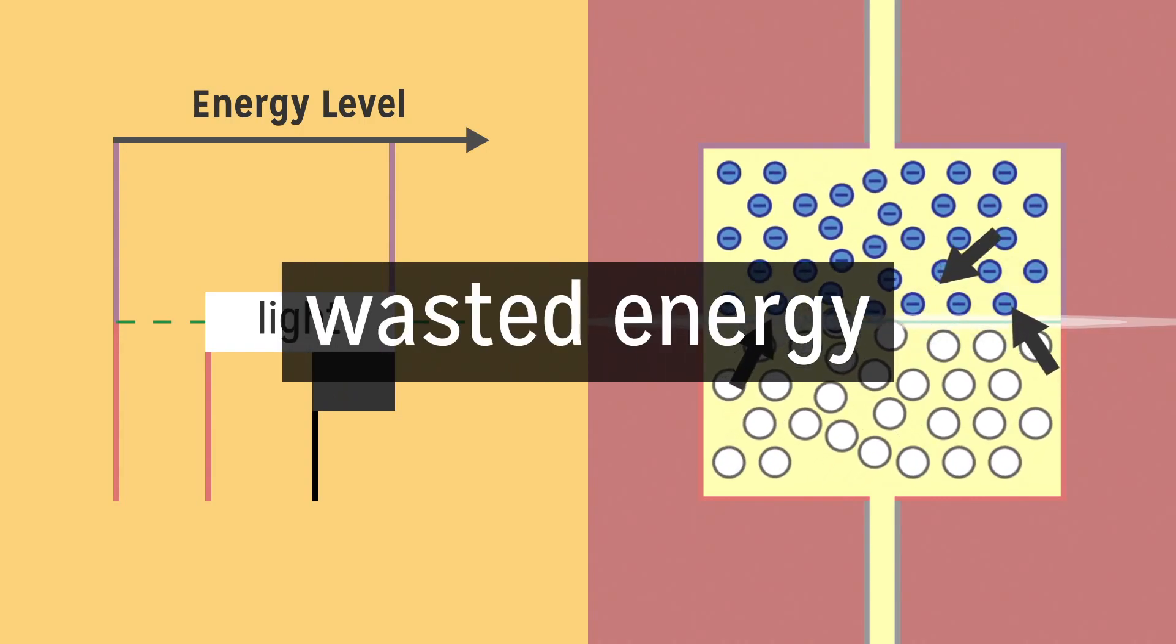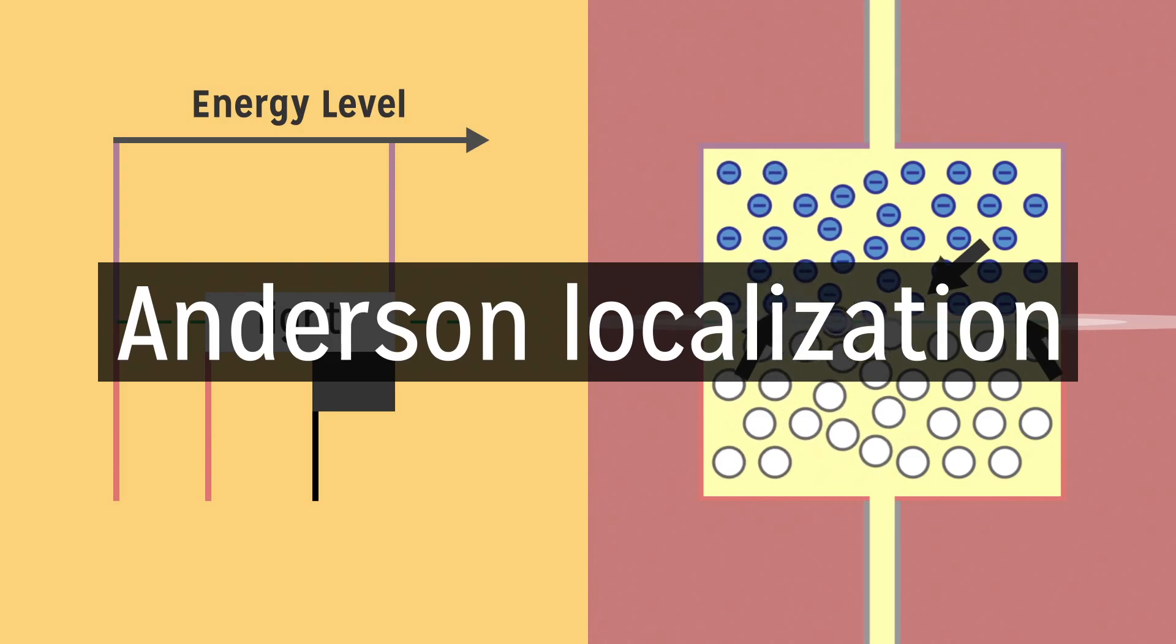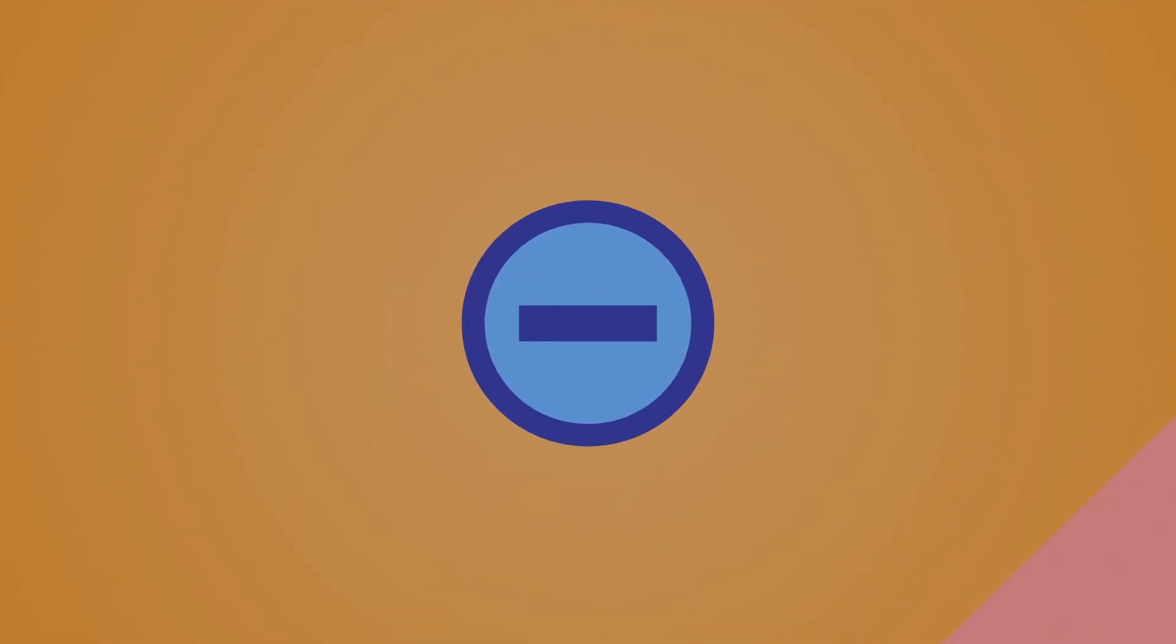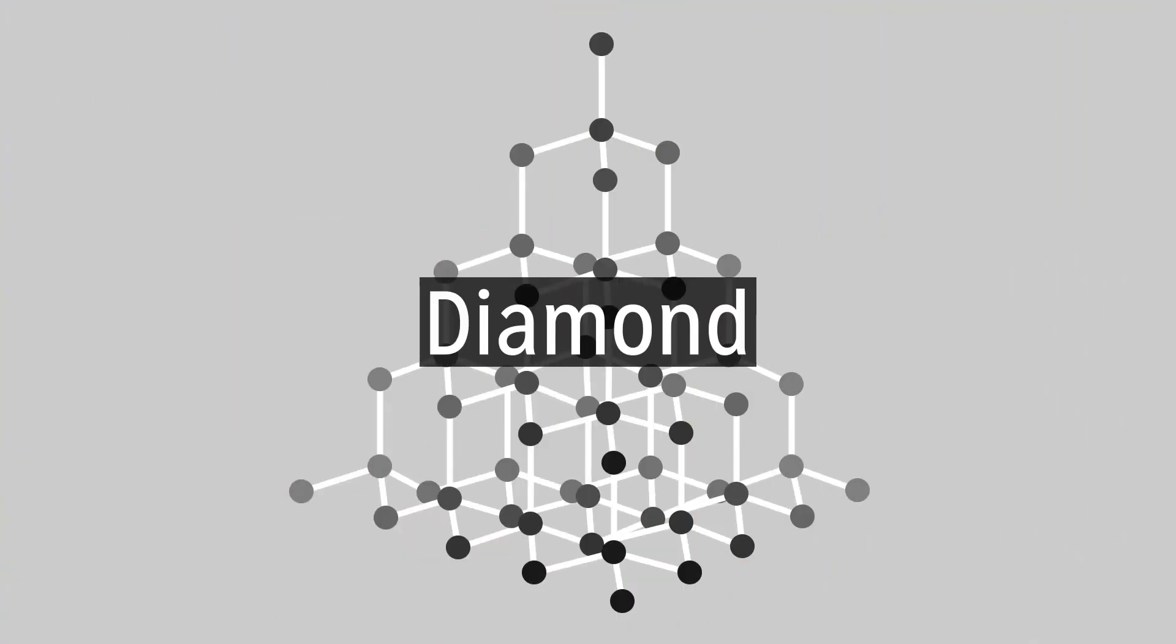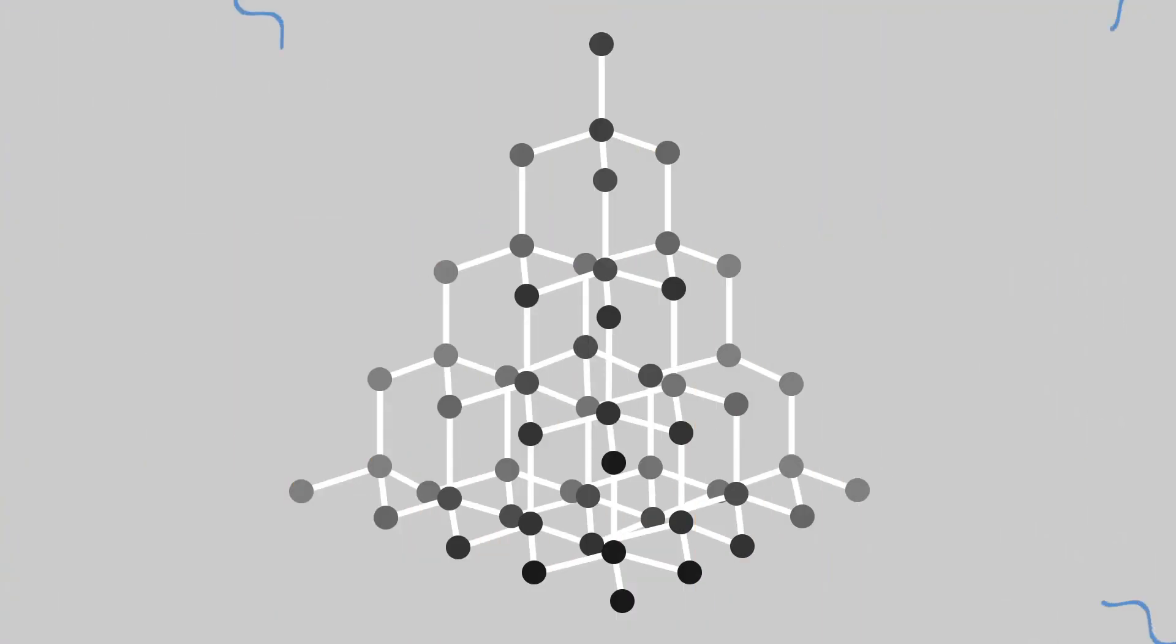The reason why this happens is because of a phenomenon called Anderson localization. Electrons exhibit properties of both particles and waves. In a material with regular atomic structure, like a crystal, the waves of electrons may propagate freely.